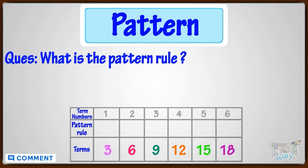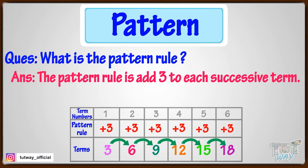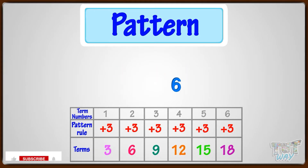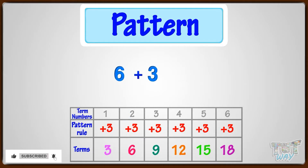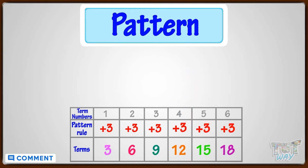What is the pattern rule for this growing pattern? The pattern rule is: start at three and keep on adding three. Term number one is three. Term number two is three plus three equals six. Term number three is six plus three equals nine. Term number four is nine plus three equals twelve, and so on.